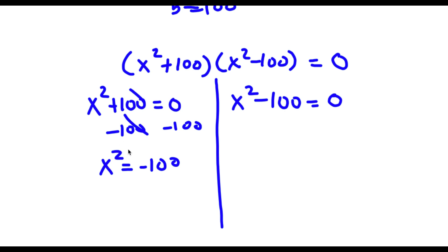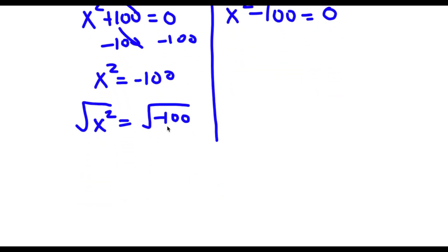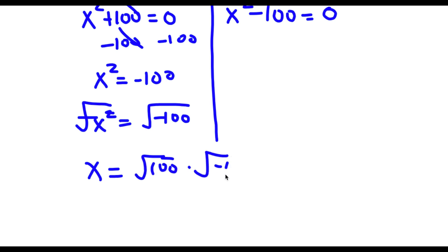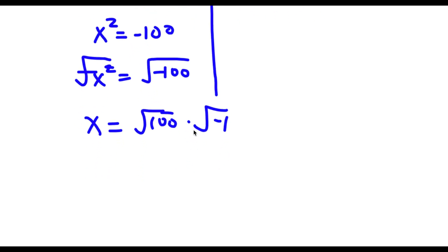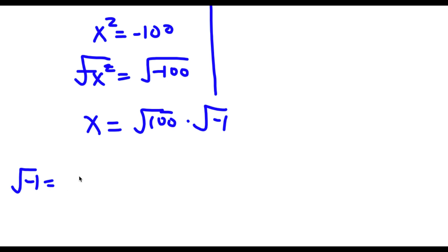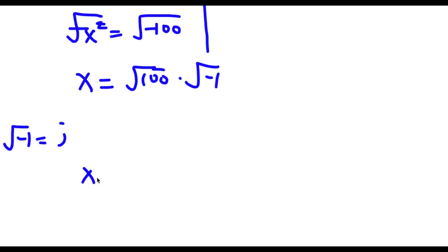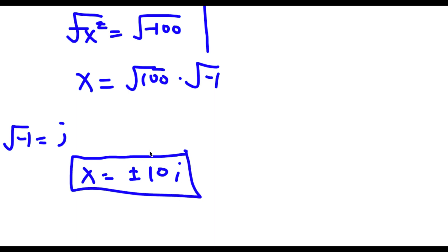Now I want to cancel out this power of 2, so I'm going to take the square root on both sides. The square root of x squared — these two simply cancel out, giving me x equals the square root of negative 100. The square root of negative 100 is the same as the square root of 100 times the square root of negative 1. The square root of negative 1 is the imaginary number i, and the square root of 100 is positive or negative 10. So x is equal to positive or negative 10i. These are two of my solutions.